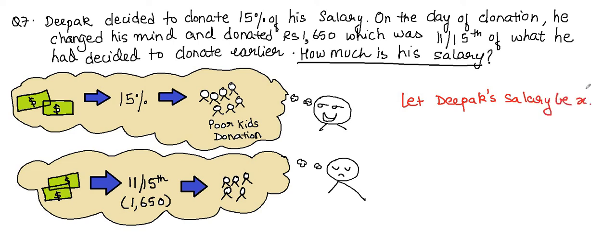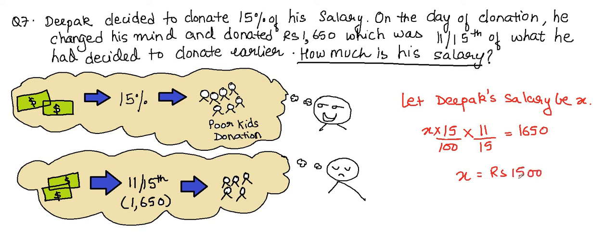He was donating 15% of his salary x, but then donated 11/15th of that planned amount, which equals 1650. So: x × 15/100 × 11/15 = 1650. Solving, x = 15,000 rupees. His salary is 15,000.